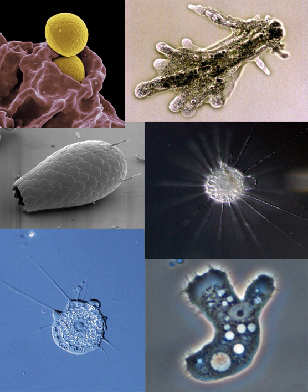Cercozoan amoeboids, such as Euglypha and Gromia, have slender thread-like filose pseudopods. Foraminifera emit fine, branching pseudopods that merge with one another to form net-like structures. Some groups, such as the radiolaria and heliozoa, have stiff, needle-like, radiating axopodia, or actinopoda, supported from within by bundles of microtubules.